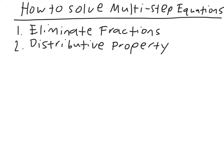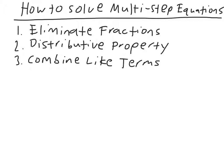The next step is to use the distributive property. So if there's any parentheses anywhere in the problem, use the distributive property to get rid of them. The next step is to combine like terms, and that's on each side of the equal sign. You look on each side of the equal sign, start with the left side, and see if there are any like terms you can combine there, then go to the right side and see if there are any like terms you can combine there.